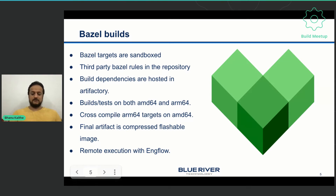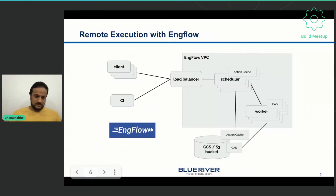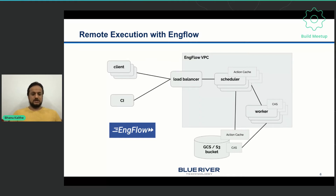To do all this, we also have a remote execution setup. Before this, we had a lot of problems. But now, thanks to Ulf Adams and his team at EngFlow, we saved a lot of cost on infrastructure as well as maintenance. It simplified a lot for us. Right now we have EngFlow workers, which are the remote executors on cloud as well as in our private network, and both of them talk to each other. The local machines are ARM64 machines which are low on resources, but using EngFlow we were able to speed up the builds.